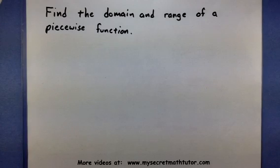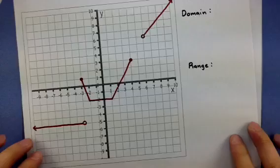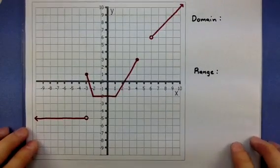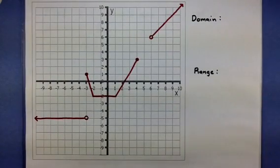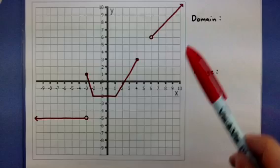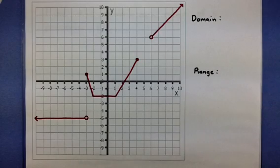Welcome to My Secret Math Tutor. Today we're going to find the domain and range of a piecewise function. Now before we can do this, let's go ahead and grab our graph of a piecewise function to see what I'm talking about. So this is basically a piecewise function. You can see that it's made up of all kinds of different pieces in here. Now if I want to find my domain and range, I want to start thinking about my inputs and my outputs of this function.